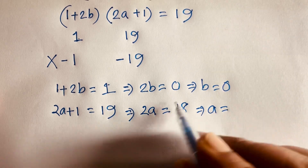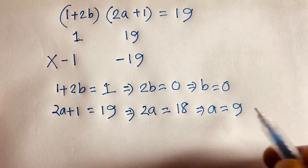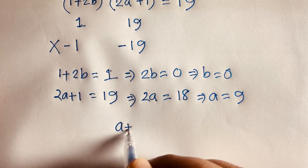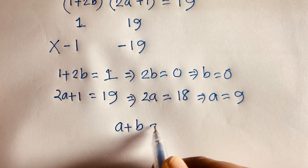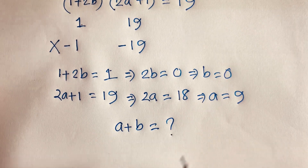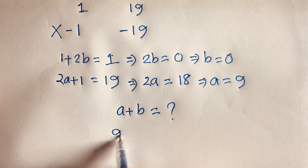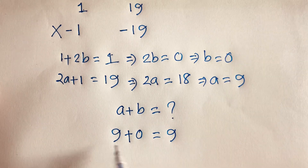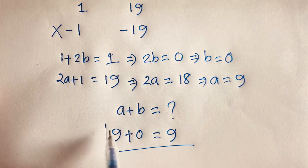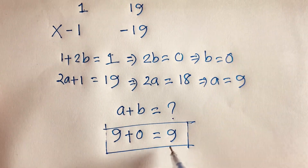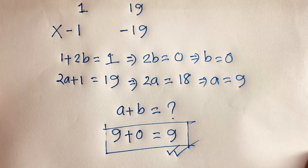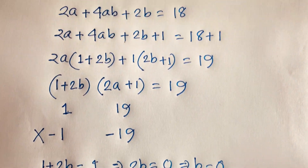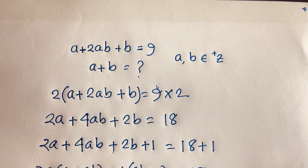Therefore a equals 9. Our question asks for a plus b, and since a is 9 and b is 0, the answer is 9. That is our final answer. Thank you all — if you enjoyed this video please subscribe and like. Goodbye!